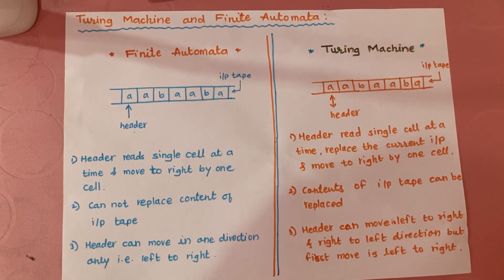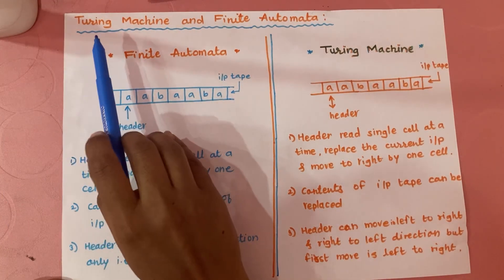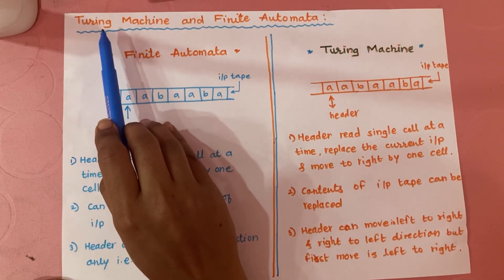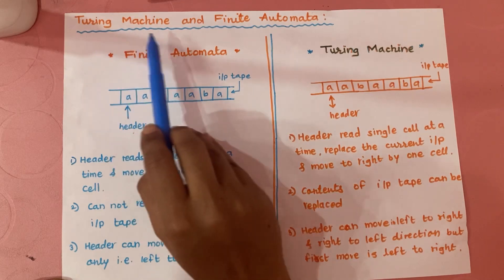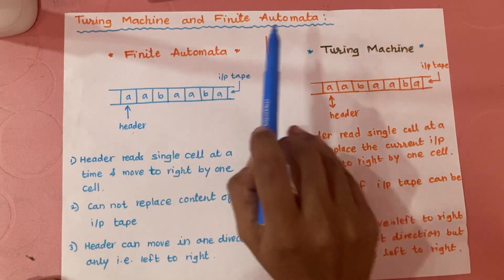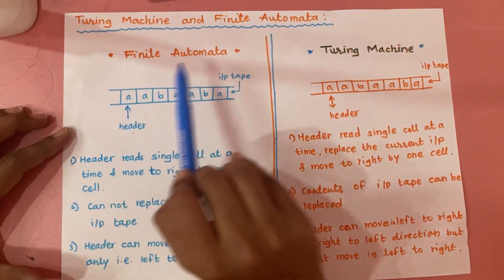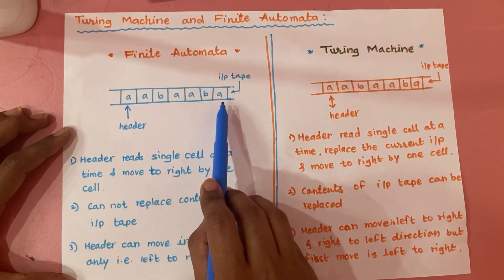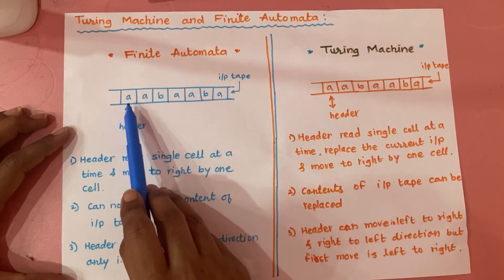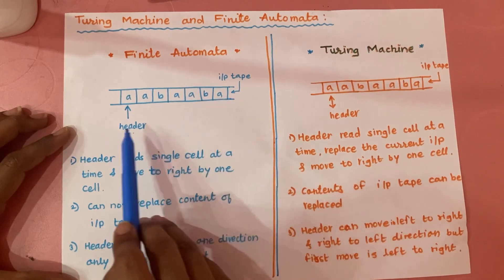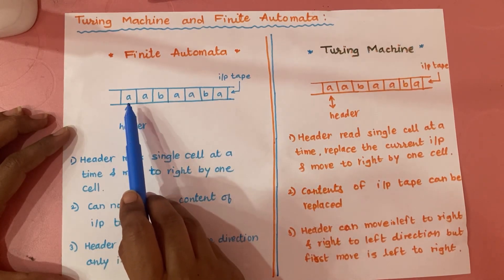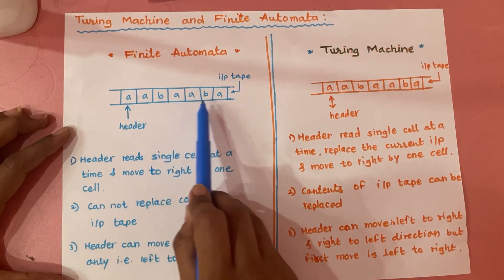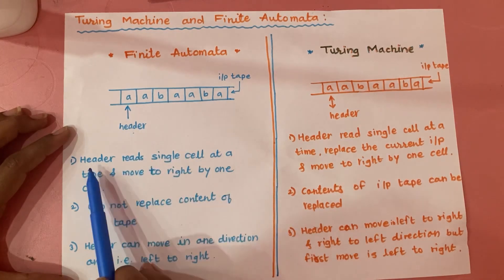Hey guys, welcome back to the channel 'Learn with R'. The next topic is we will compare the finite automata with Turing machine. As we have already known the structure of finite automata, in case of FA we have an input tape on which the input alphabets are written, and for reading those input alphabets we have a header.